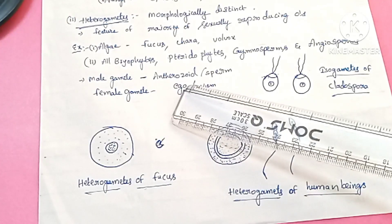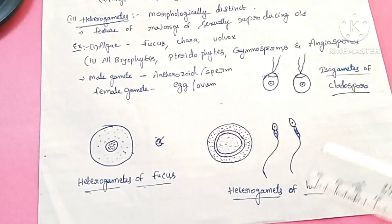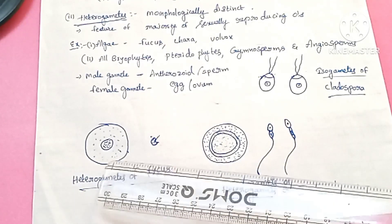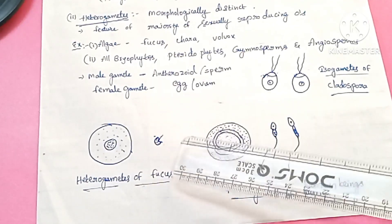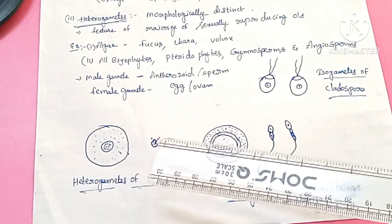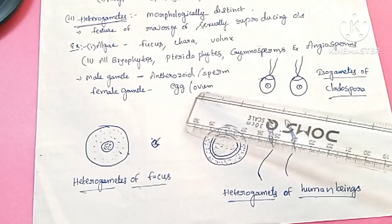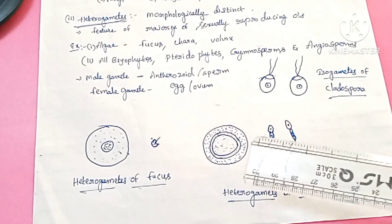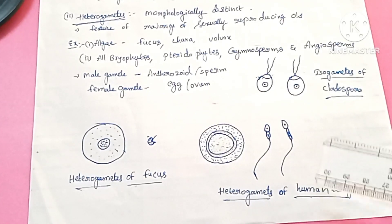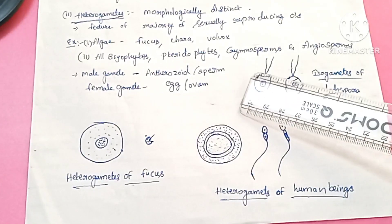In heterogametes, the male gamete is called antherozoid or sperm. Female gametes are large in size while male gametes are small and motile — both are morphologically different. Male gametes are called antherozoids or sperms, and female gametes are called eggs or ova. In human beings, the sperms are the male gametes and the egg is the female gamete.